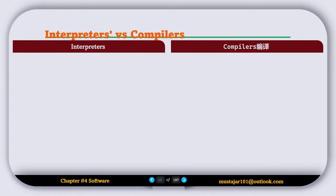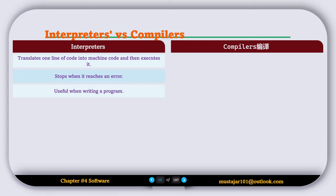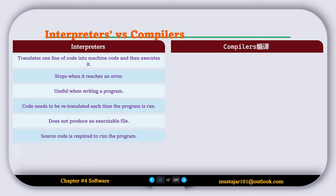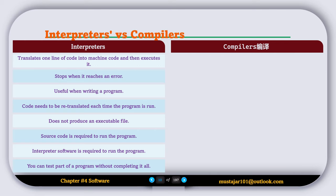Now let's compare interpreters and compilers. An interpreter translates one line of code into machine code and then executes it, stopping when it reaches an error. It is useful when writing a program. Code needs to be retranslated each time the program is run. It does not produce an executable file. Source code and interpreter software are required to run the program. You can test part of the program without completing it all.